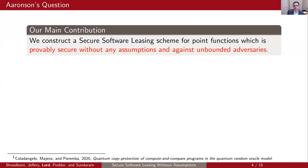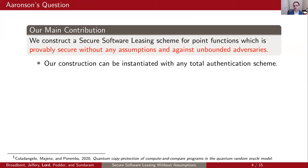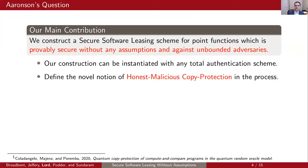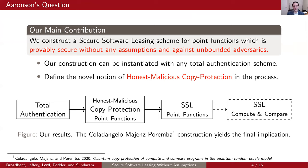The main contribution in this work is that we construct a secure software leasing scheme specifically for point functions, which is provably secure without any assumptions at all and against unbounded adversaries. Our construction can be instantiated by any total authentication scheme. We obtain our secure software leasing scheme by passing via this novel security notion of honest malicious copy protection. If we sketch out the results: you take a total authentication scheme, use this to construct an honest malicious copy protection scheme for point functions, which implies SSL for point functions — and by a result of Coladangelo, Mayans, and Premba, SSL for point functions also yields SSL for compute-and-compare functions.